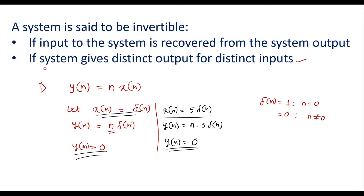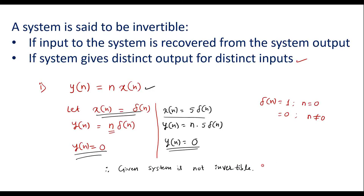According to the definition, the system should give distinct output for distinct inputs. But in this case, we got the same output y of n equal to 0 for two different inputs. Therefore, this system is not invertible, since distinct inputs give the same output.